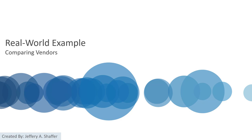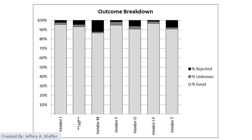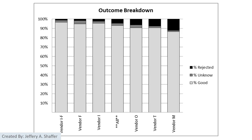Another example compares vendors. The chart has three outcomes — good, rejected, and unknown — with vendors shown on the x-axis along with an 'all' category. The redesign demonstrates the power of ordering: by sorting the data, we can see that vendor M has the highest rejection rate.